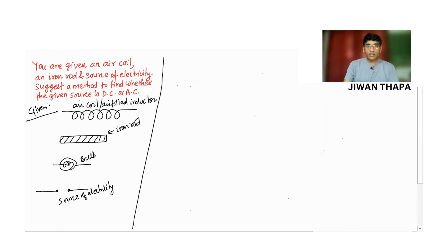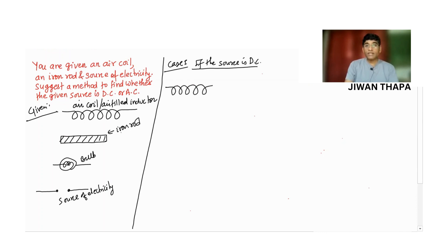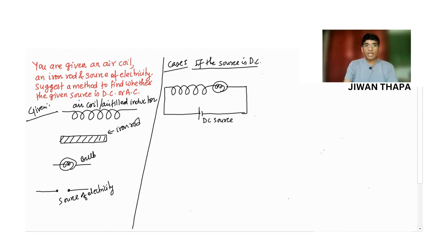Let us consider Case 1: if the source is DC. I am drawing the circuit — we have an inductor, that is an air-filled inductor, and we have a bulb and a battery, which is a DC source. We have the DC source or battery and we have an inductor having inductance L.